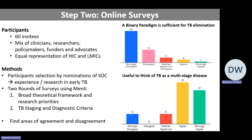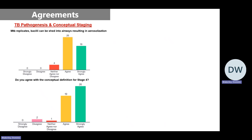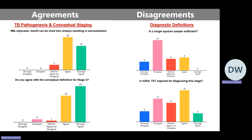Unsurprisingly, in response to the question 'is a binary paradigm sufficient?', most people strongly disagreed — the current binary paradigm is not sufficient. Most people thought it is useful to think of TB as a multi-stage disease. There was also broad agreement on TB pathogenesis and conceptual stages. Where disagreements emerged was around specific diagnostic criteria — for instance, whether a single sputum sample is sufficient, whether multiple samples are needed, or whether IGRA or TST is required for diagnosis. That's where we stood with step two.